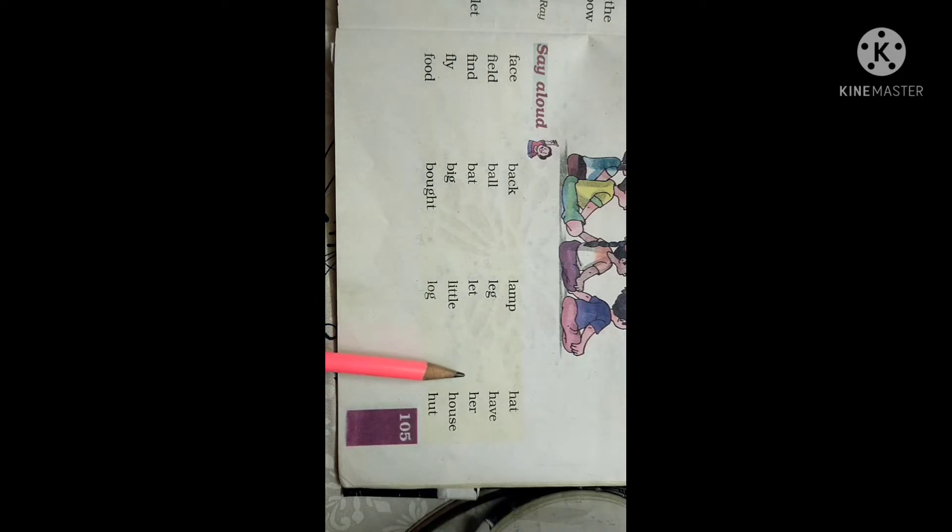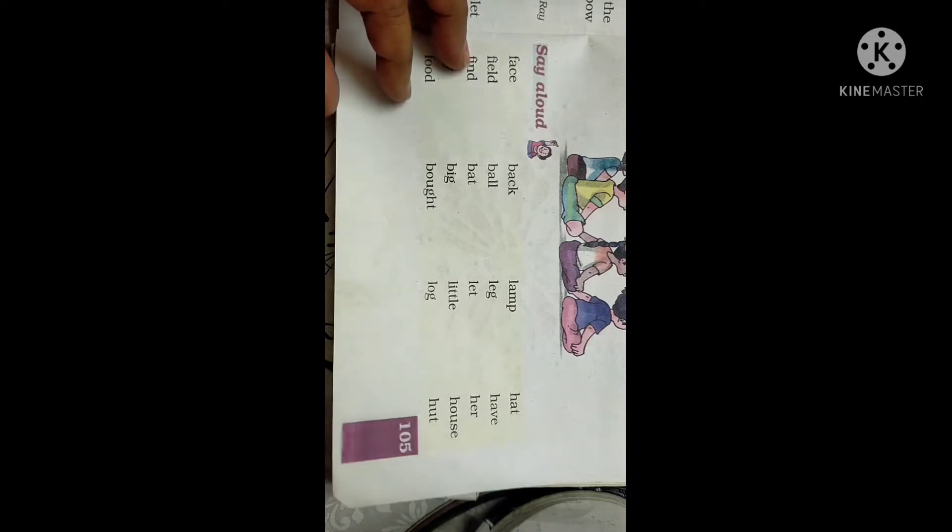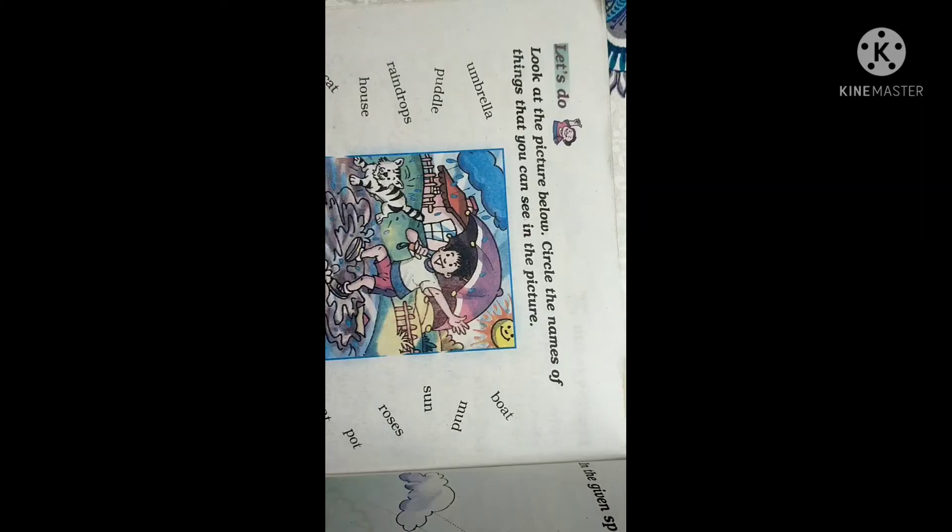Hat, have, her, house, hut. So these all are the words having the vowels in it: A, E, I, O, U. Now page 106.